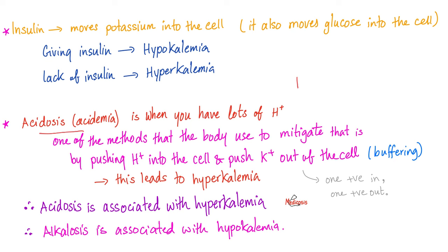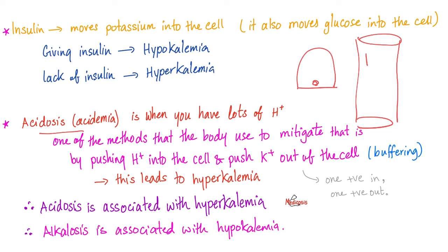Another important point is acidosis or acidemia. When there is too many protons in the blood, in order to buffer them, some protons can switch into the cell. To maintain electroneutrality, if a positive enters the cell, another positive has to leave — and that positive is the most abundant one inside the cell: potassium. Hydrogen comes in, potassium leaves the cell and goes to the blood, causing hyperkalemia. Conversely, if I have alkalosis, it goes with hypokalemia.